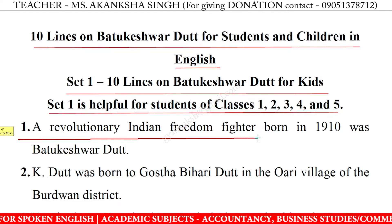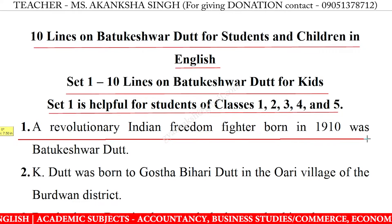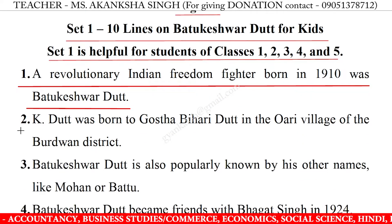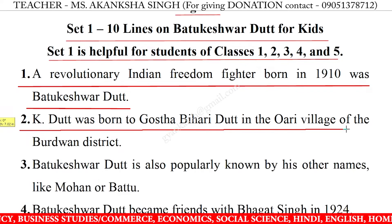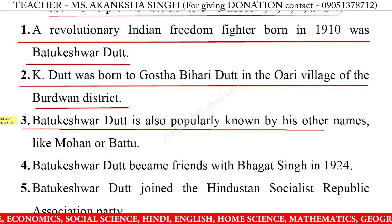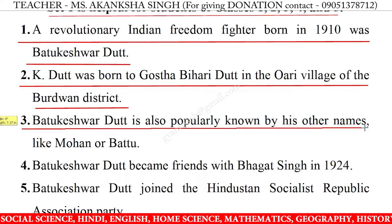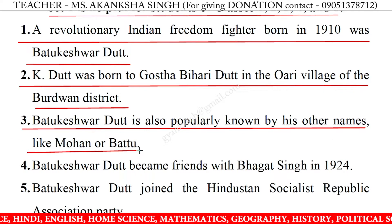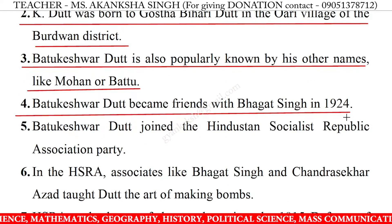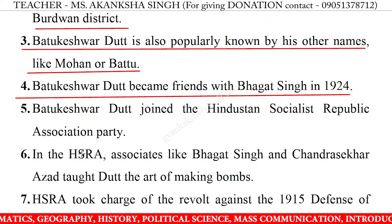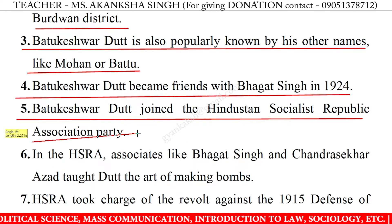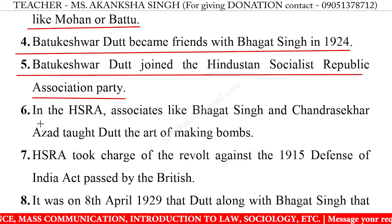1. A revolutionary Indian freedom fighter born in 1910 was Batukeshwar Dutt. 2. Dutt was born to Goshta Bihari Dutt in the Oari village of the Bardawan district. 3. Batukeshwar Dutt is also popularly known by his other names like Mohan or Battu. 4. Batukeshwar Dutt became friends with Bhagat Singh in 1924. 5. Batukeshwar Dutt joined the Hindustan Socialist Republic Association Party.